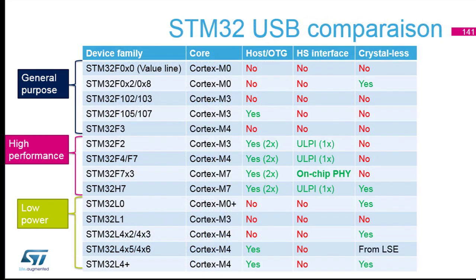Here are some maps showing the different families — general purpose, high performance, and low power — and what capabilities each has, including crystal-less support. You can see that high performance addresses all OTG, host, and high speed interfaces with an external PHY. This is a current summary, but it needs to be updated as new parts arrive, so don't treat it as a bible.